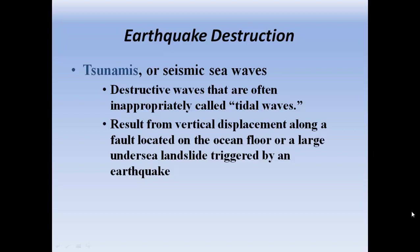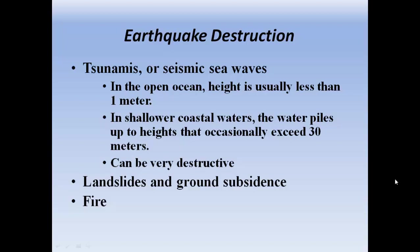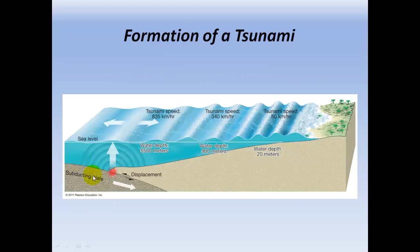Tsunamis, or seismic sea waves, are destructive waves often inappropriately called tidal waves. They result from vertical displacement along a fault located on the ocean floor or a large undersea landslide triggered by an earthquake. The 1964 Alaskan earthquake had an undersea landslide that triggered a huge tsunami — five hours later it hit Hawaii. In open sea, wave height is usually less than one meter, but in shallow coastal waters the water piles up to heights that occasionally exceed 30 meters. A tsunami wave is only about a meter high in the open ocean, but once it gets closer to shore it piles up into a very tall wave — up to 30 meters in height.